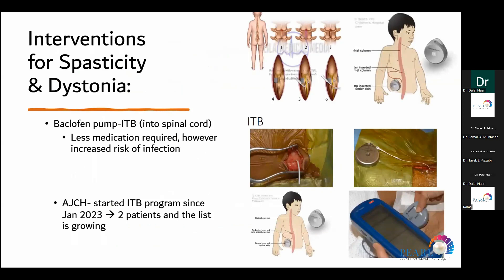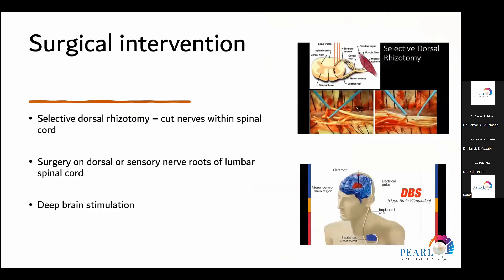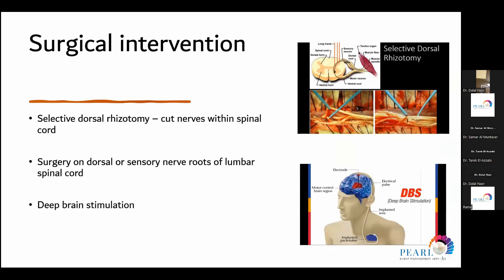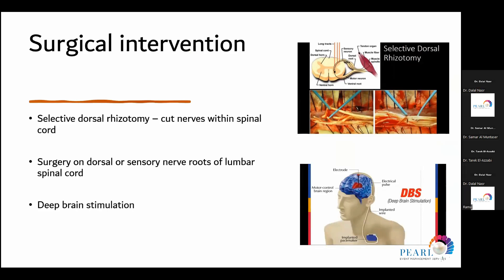Intrathecal baclofen pump is one of the surgical interventions used. A catheter is introduced into the spinal fluid, delivering baclofen through a reservoir attached internally to the abdominal wall, giving small daily doses directly into the CSF to reduce dystonia and spasticity. We at Al Jalila started the intrathecal baclofen program in January this year, with two patients showing good results, and the list is growing. Other surgical interventions include selective dorsal rhizotomy for spastic diplegia, and deep brain stimulation for severe dystonia and severe spastic quadriplegia.